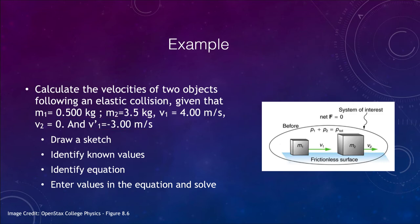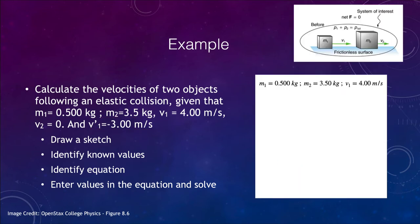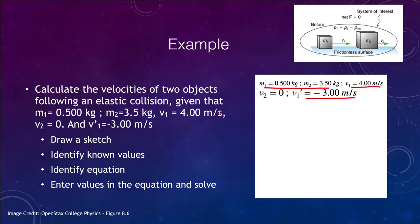Looking at our diagram, let's list what we know: the masses, the initial velocities, and one of the final velocities, V1 prime. What we're trying to find is V2 prime — the velocity of the second object after the collision. Remember that initially V2 was zero, meaning the second object was not moving, and we want to find its velocity after the collision.